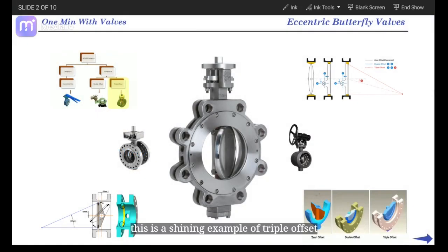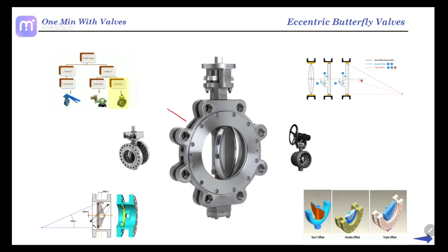This is a shiny sample of triple offset butterfly valve in stainless steel material. See the parts: body, disc, stem, seat and seat retainer, blend flange and top flange.